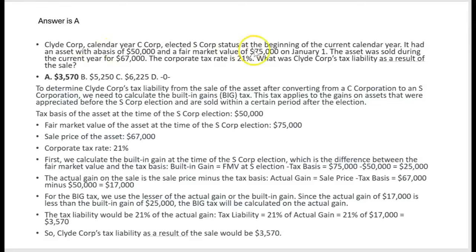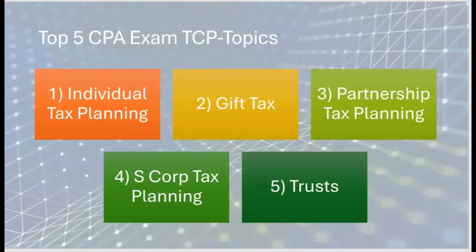Clyde Corp's tax liability from the sale is $3,570 — answer A. The corporation gets taxed because the asset appreciated during its C-corp days and was sold within five years of becoming an S-corp. If Clyde Corp had held the asset for more than five years and sold it in year six or seven, the gain would simply pass through to shareholders on the K-1 with no built-in gains tax. That's where the tax planning comes in: do you sell right away or wait five years?